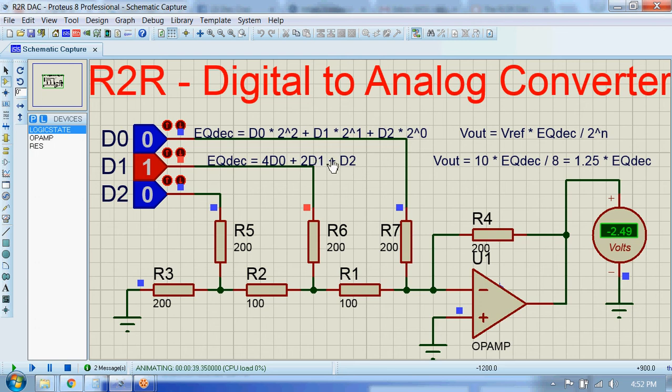Then this output voltage will be 1.25 times 2, which is 2.5 volts. You can see this voltmeter is displaying 2.49 volts, which is nearly 2.5 volts.